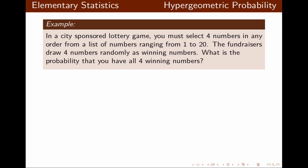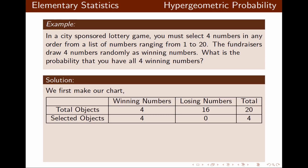In a city-sponsored lottery game, you must select four numbers from a list of 20 numbers. The fundraisers also draw four numbers randomly as winning numbers. What is the probability that you have all four winning numbers? We make our chart: there are four winning numbers and 16 losing numbers for a total of 20. Our desired event is to have four winning numbers and zero losing numbers.